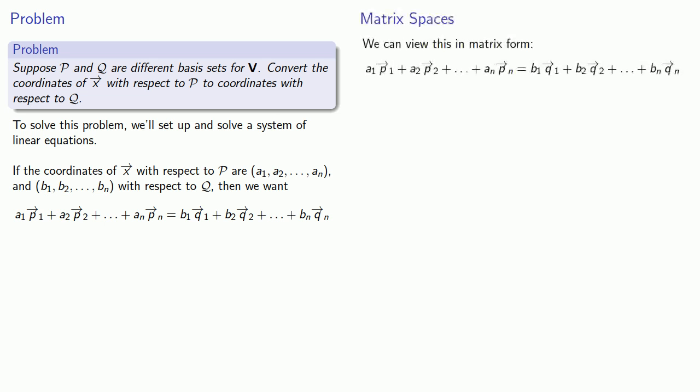On the left-hand side, we have the matrix consisting of the columns p1 through pn and the column vector of the coordinates a1 through an. On the right-hand side, we have the matrix consisting of the columns q1 through qn and the column vector corresponding to the coordinates with respect to Q. And purely for notational convenience, we'll let P be the matrix whose columns are the basis p and Q be the matrix whose columns are the basis q.